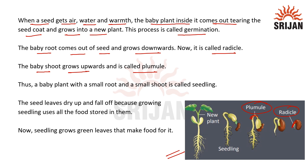Thus a baby plant with a small root and a small shoot is called a seedling. The seed leaves dry up and fall off because the growing seedling uses all the food stored in them, and now the seedling grows green leaves that make food for it.